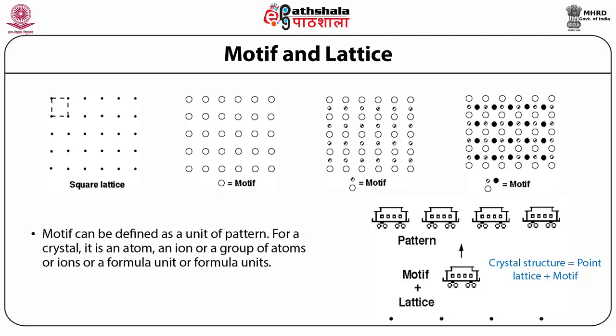For example, on the left hand side of the slide you can see a square lattice where a single dot corresponds to the motif arranged in a square periodic pattern forming a crystal. The second example has a periodic arrangement where the motif is a hollow circle. In the third figure the motif consists of two atoms — one hollow and another smaller one that is partially filled. The motif plus lattice forms a periodic pattern called a crystal.